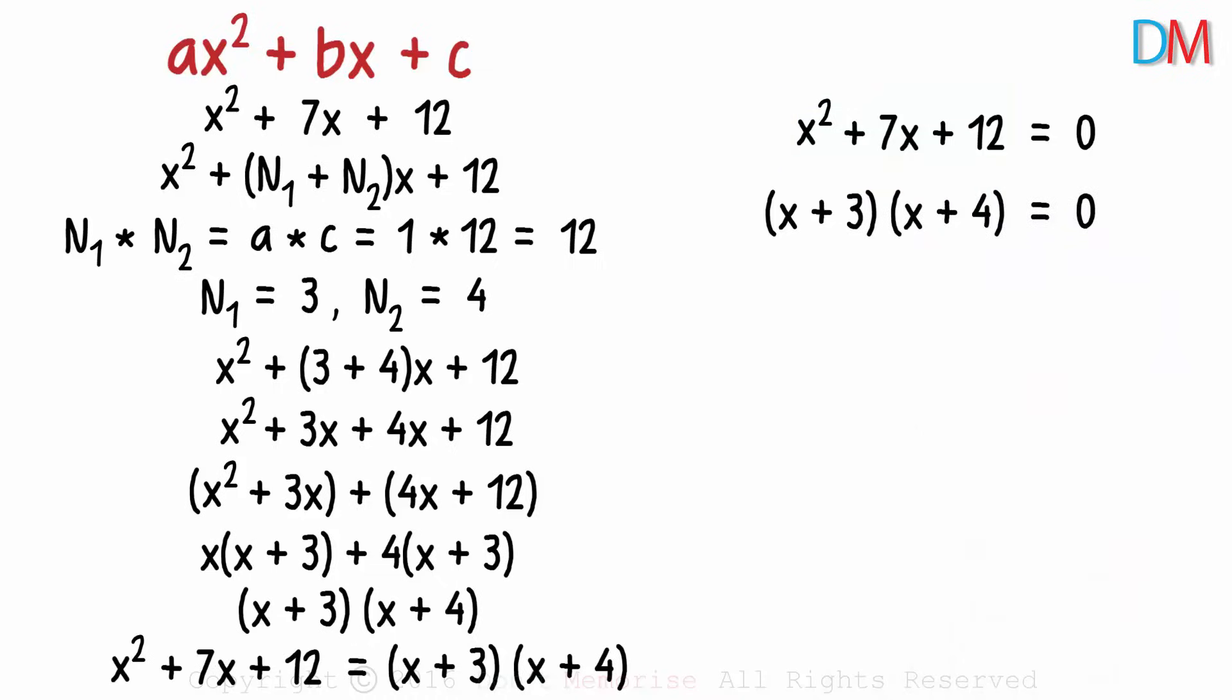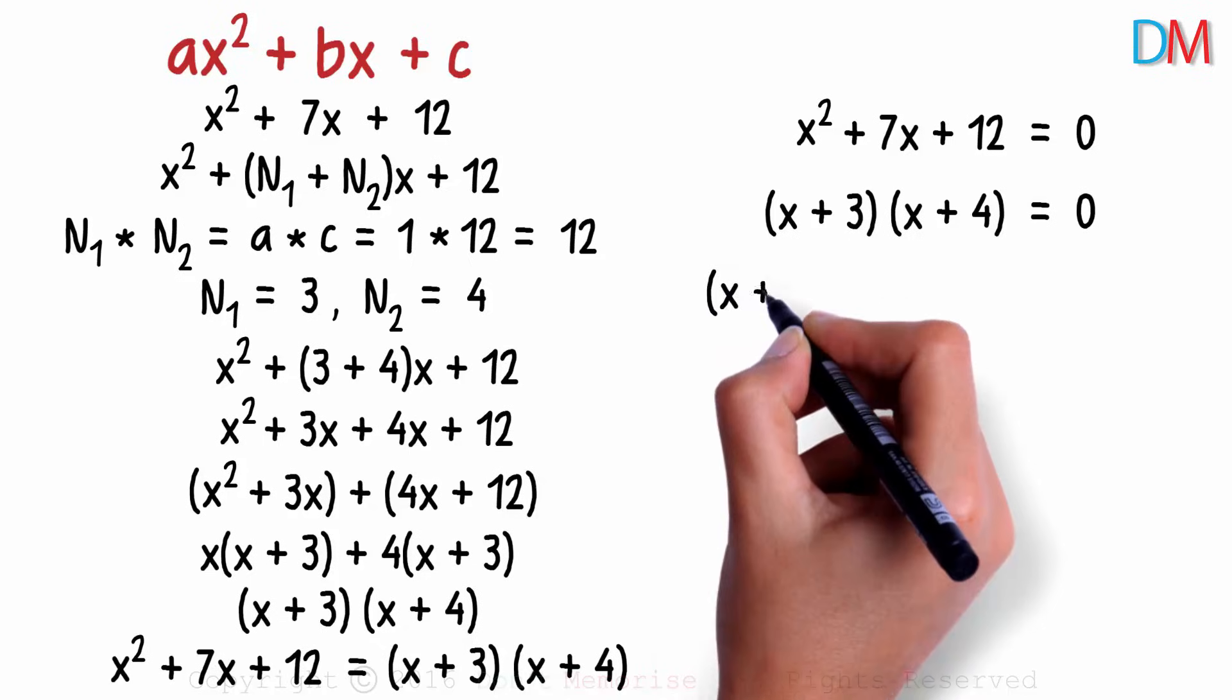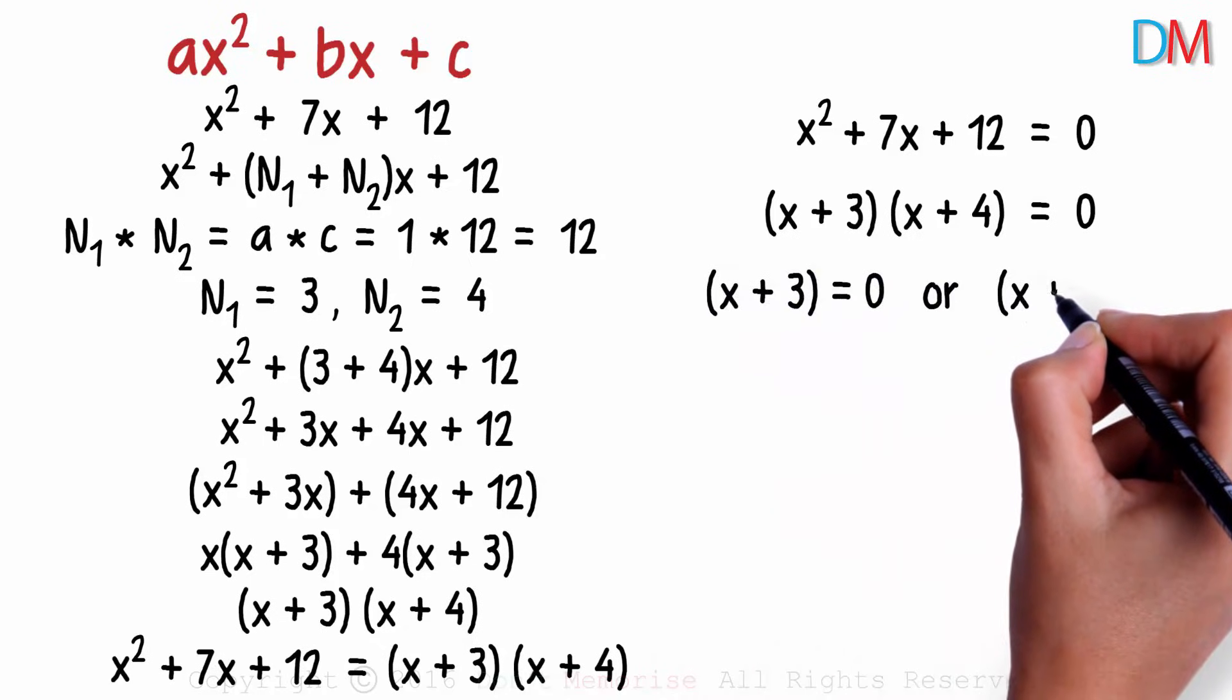Now I want you to think a bit logically. When the product of A and B is equal to 0, what can we imply? We can say that at least one of them will be 0. Either A or B will be 0. If we apply the same concept to this, we can say that either x plus 3 equals 0 or x plus 4 equals 0.